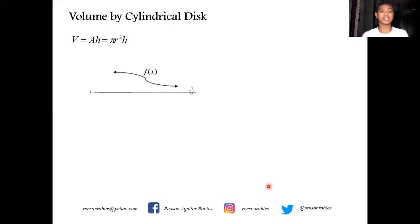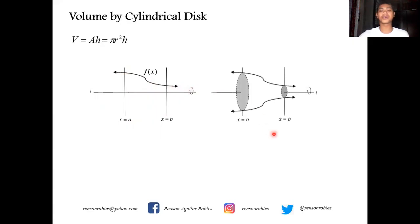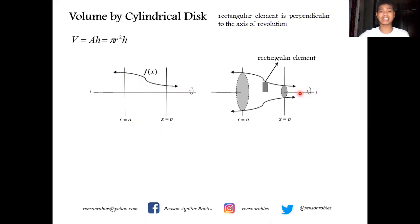Let us consider the function f of x, with the line L as the axis of revolution and two vertical lines x equals a and x equals b. The region is bounded above by the curve y equals f of x, below by the line L which is our axis of revolution, and between the two vertical lines x equals a and x equals b. Revolving this region over this line generates a solid. We then take a vertical element, with the axis of revolution being horizontal.